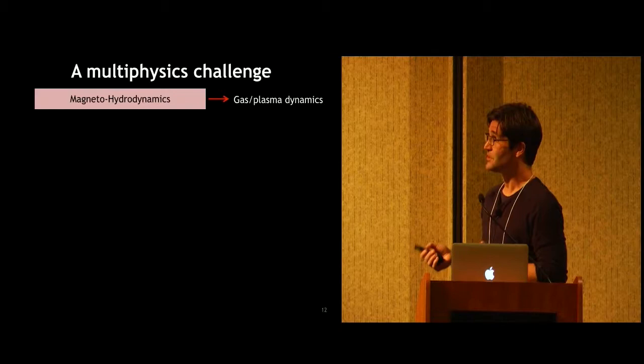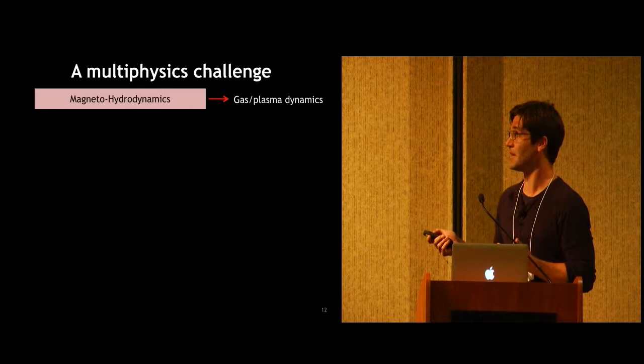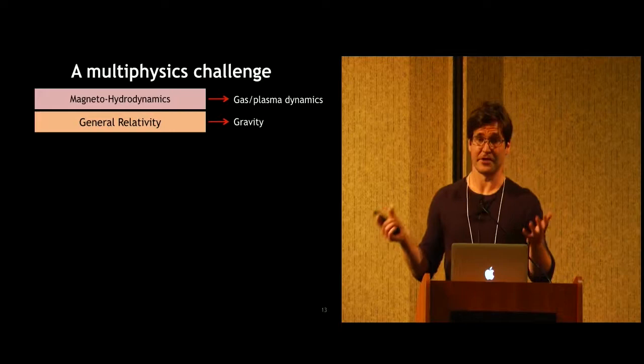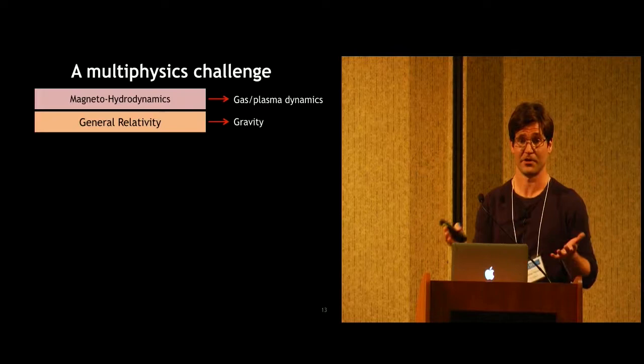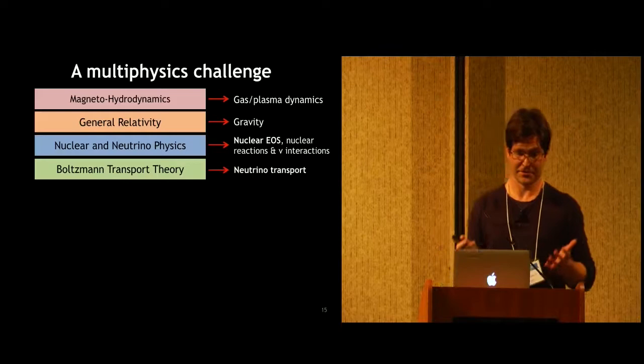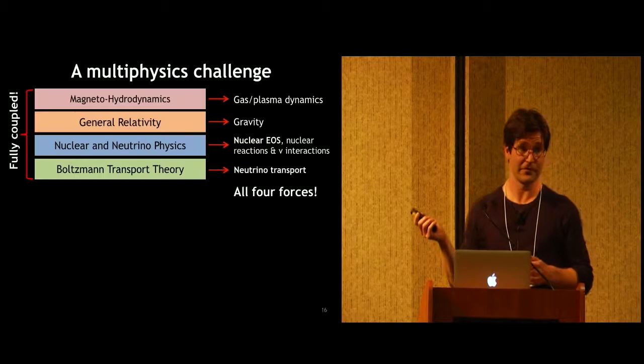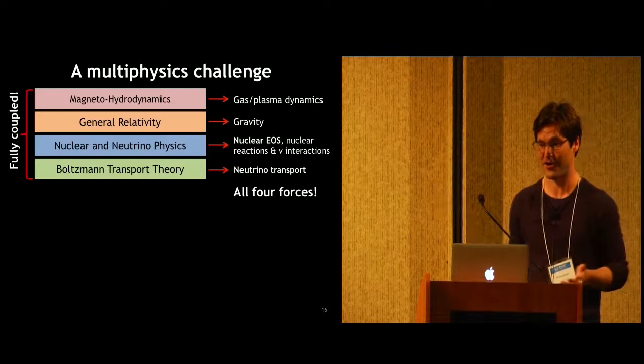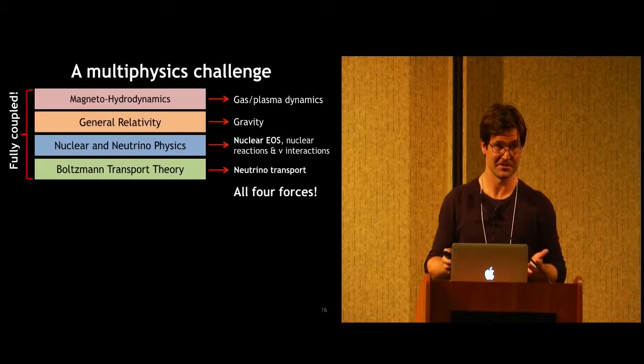For the computational challenge of this problem, this is really combining a lot of different things. First of all, you need magnetohydrodynamics to handle the gas and plasma dynamics. You need general relativity to handle the gravity aspect of the problem being able to handle the iron core collapse to a neutron star, possible later on black hole formation. You need nuclear neutrino physics to handle the nuclear reactions, neutrino interactions, and then you need basically a full Boltzmann transport theory to deal with the neutrino transport and how these leak out of the star. So this is really all four forces fully coupled. This is an ideal problem for a computer like Blue Waters since it's hugely complex, and even with a machine like Blue Waters, we need to make approximations in some of these sectors to be able to efficiently simulate these events in 3D.